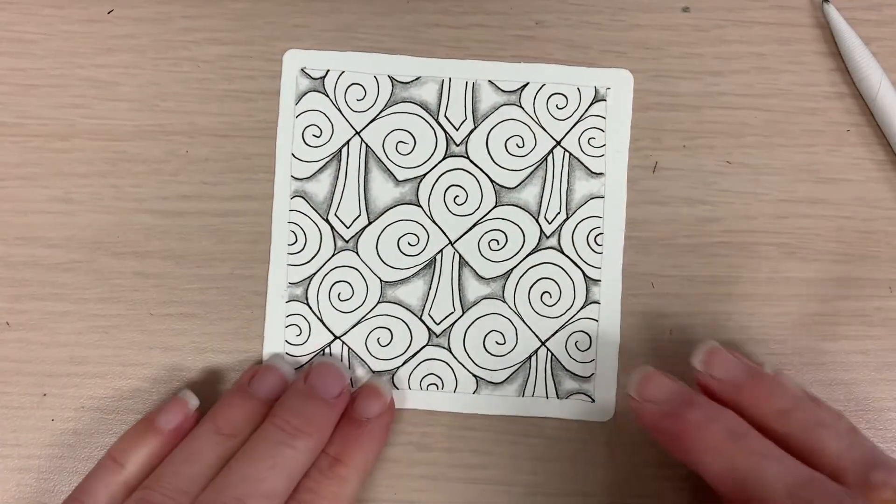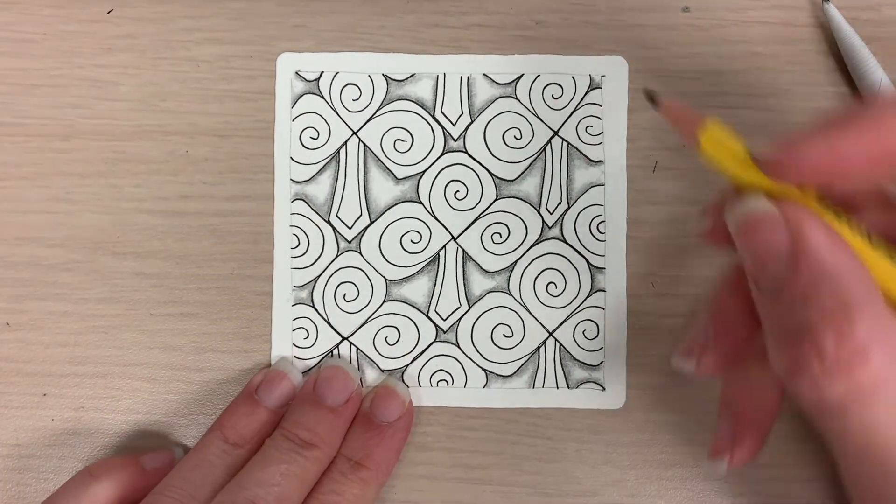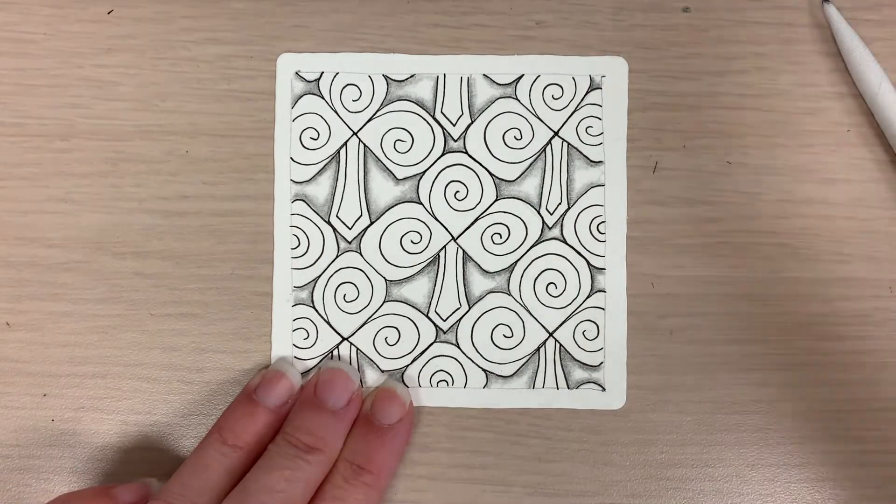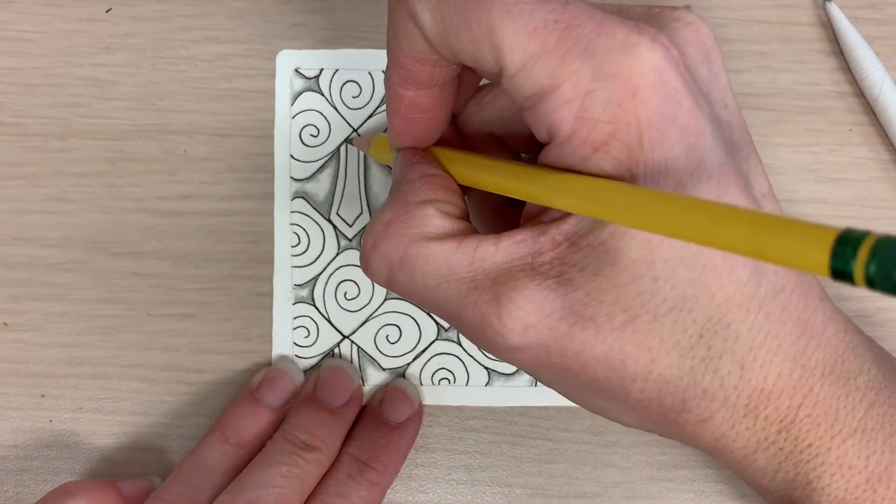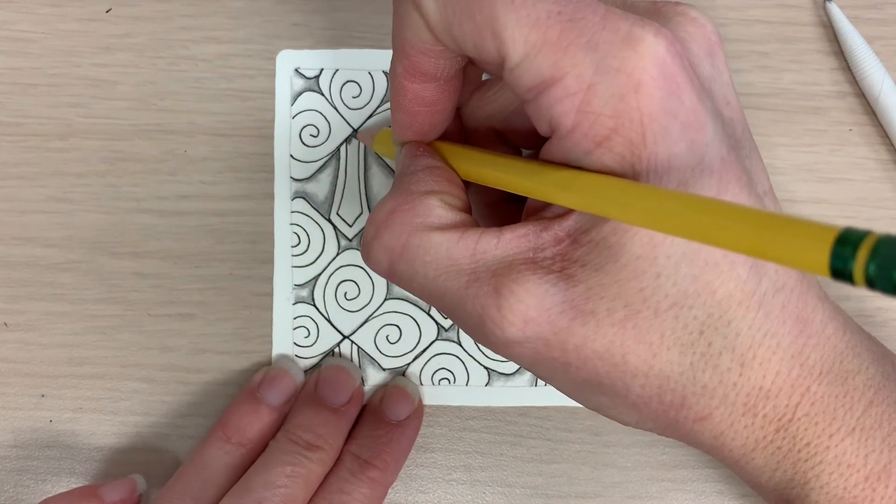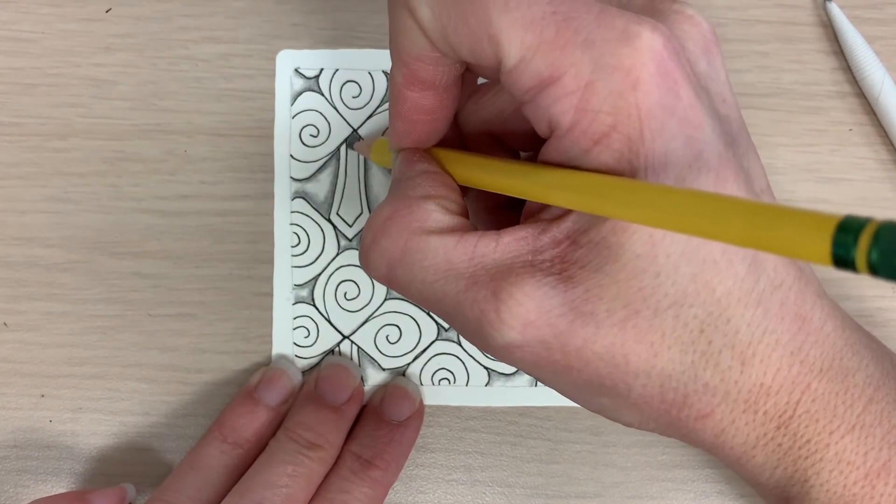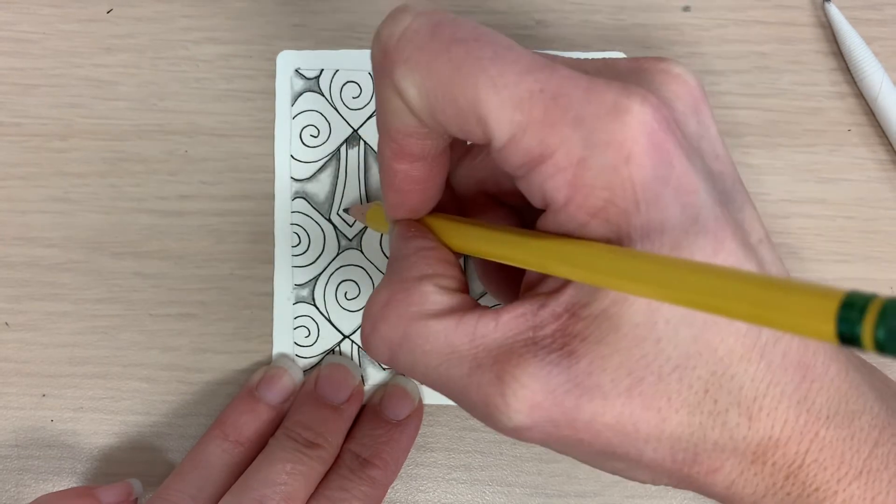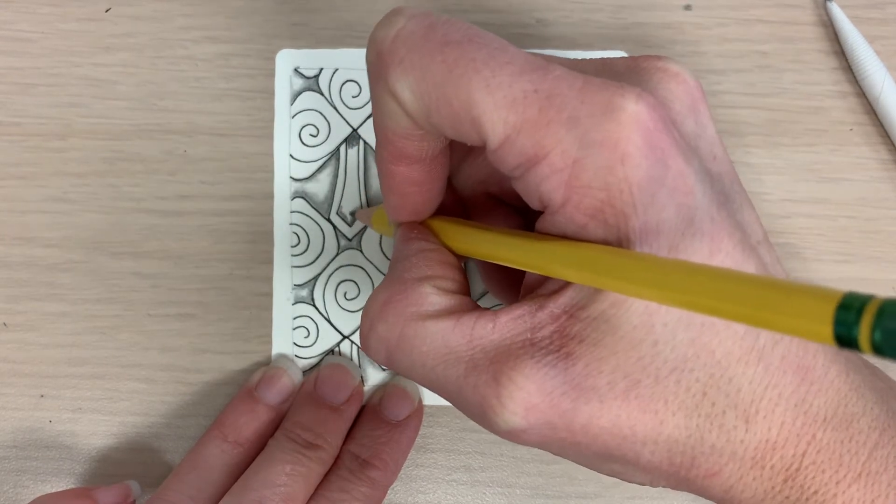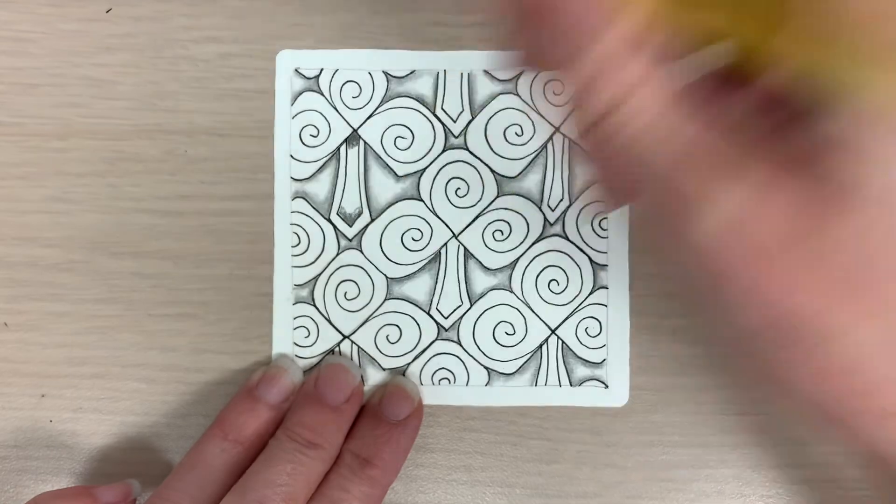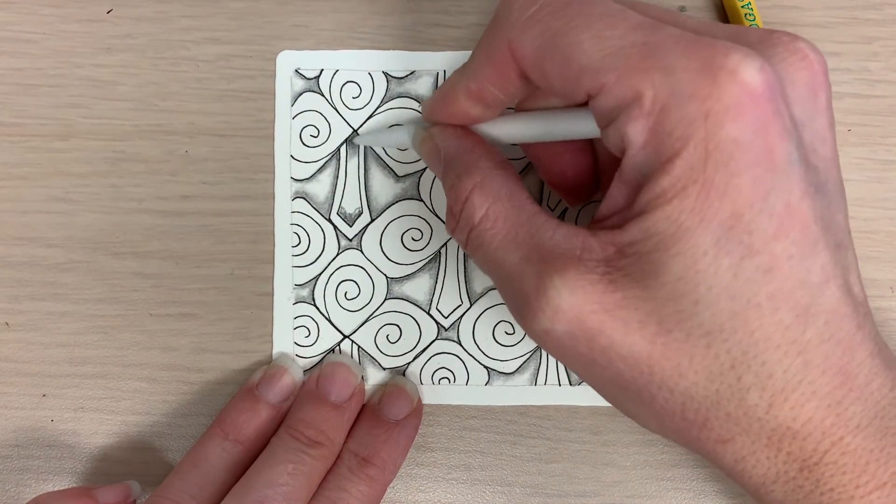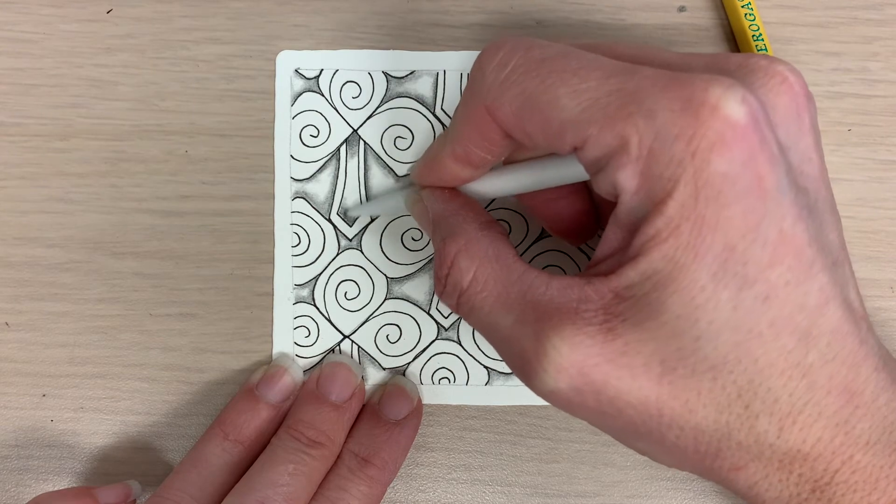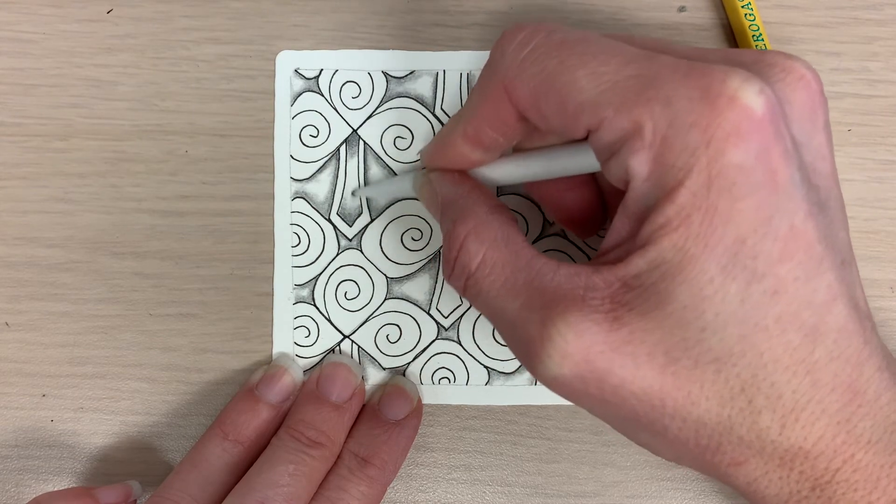Next I'm going to go in and shade the stems and remember you can do other things, you can use color prismacolors, you could use markers, you can do a lot of really fun things with this tangle. So I'm going to add a little shadow on the top part and the bottom of the stem. I'm going to take my tortillon and pull it towards the center but I want to make sure that I leave white in the center as well.